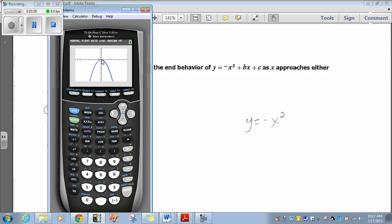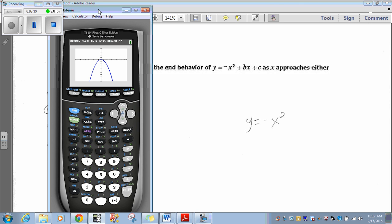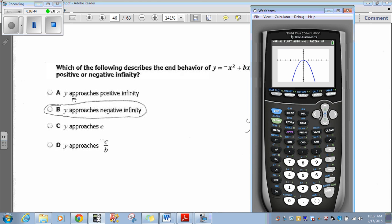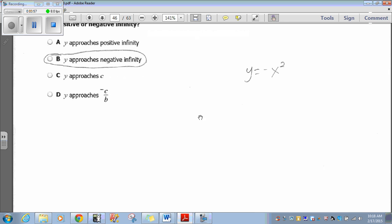So it looks like as x goes towards positive infinity, y goes towards negative infinity. As x goes towards negative infinity, y also goes towards negative infinity. Let's look at our answer choices. Y approaches negative infinity on both sides. So that's our answer choice, B.